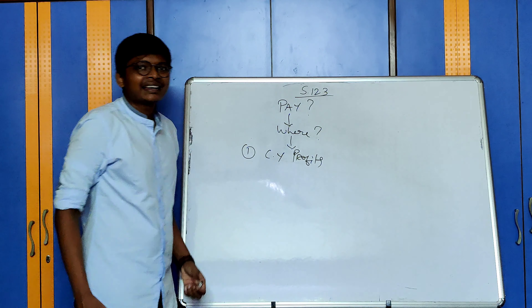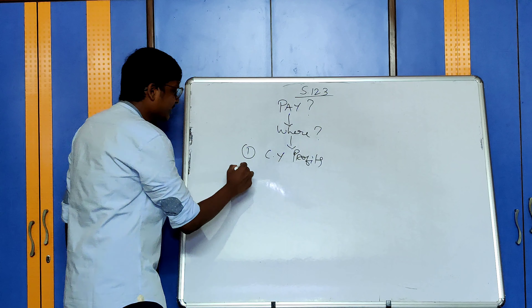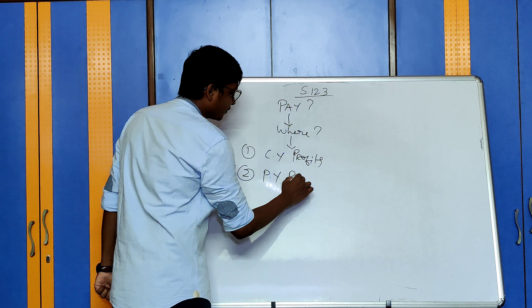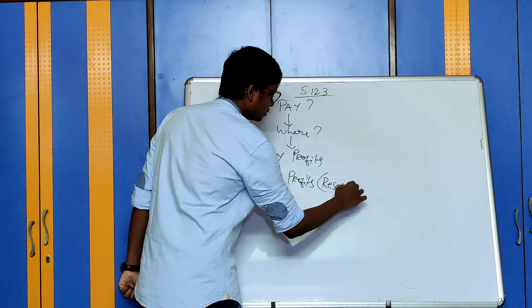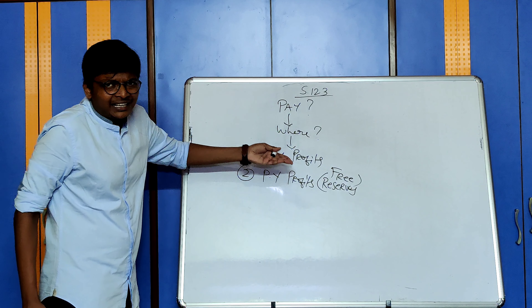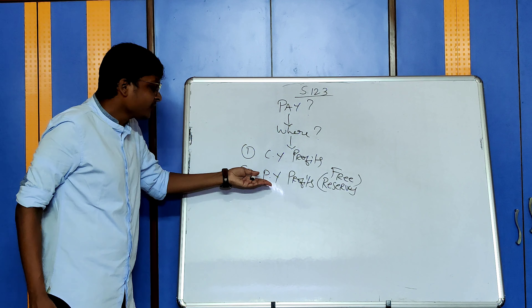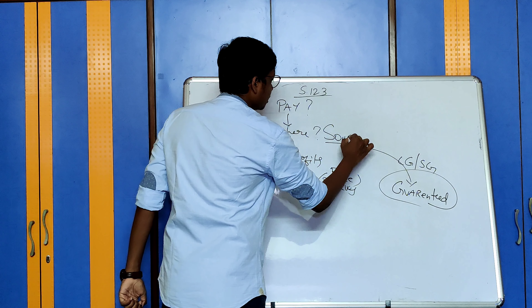Let us assume in our example, if the current year the company has made a loss, then what will they do? They will use their previous year profits to pay the dividend, which is nothing but free reserves. So you can pay out of current year profits, or from previous year profits, or a combination of both. Also, in certain cases, the central government or state government will guarantee a company that they will pay dividend if the company is not able to pay — for example, in risky infrastructure projects. In those cases, using the money guaranteed by the government, they can use that money for paying the dividend. This is the source of dividend.